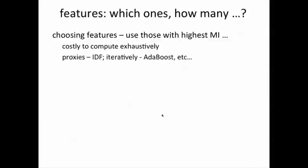A good proxy that we've seen earlier is the inverse document frequency. There are other techniques — AdaBoost in particular is an important algorithm — but we won't go into that in detail in this course. For the moment, think about using those words with high inverse document frequency as a proxy for words which are likely to be good features.